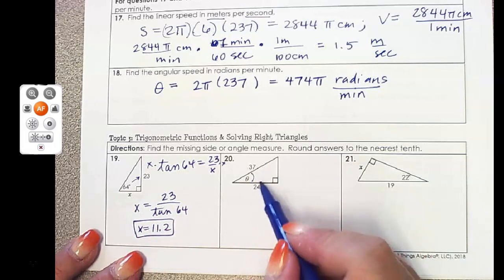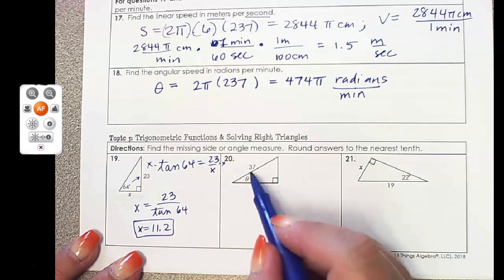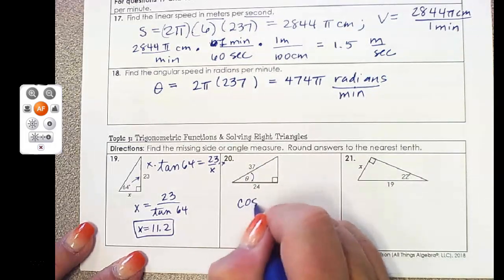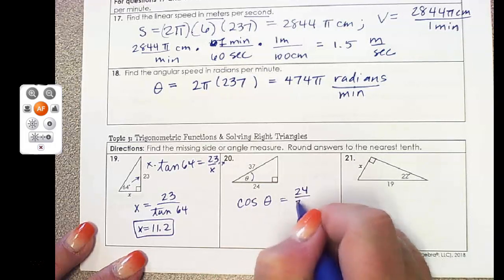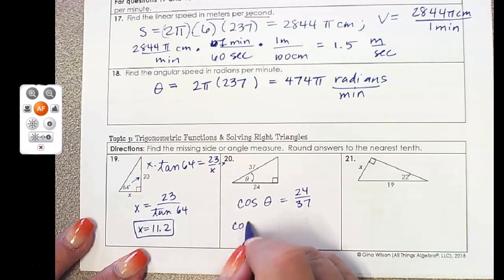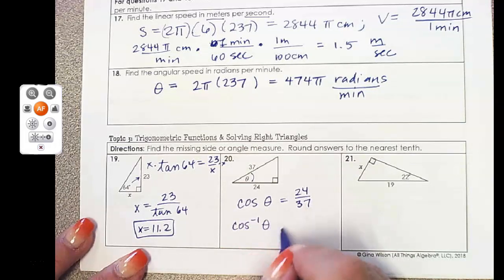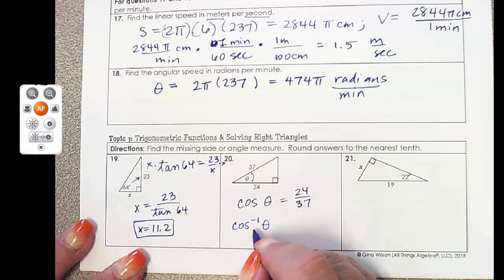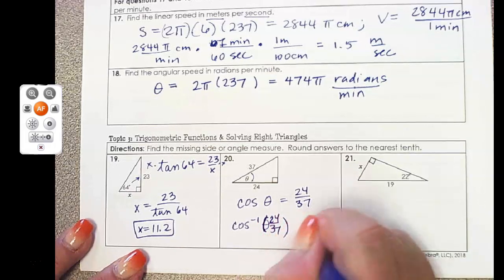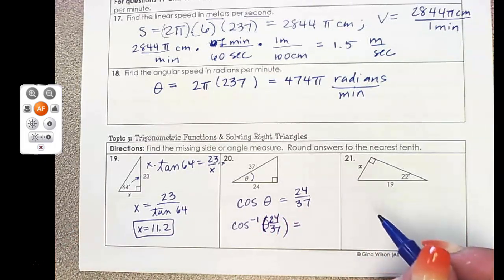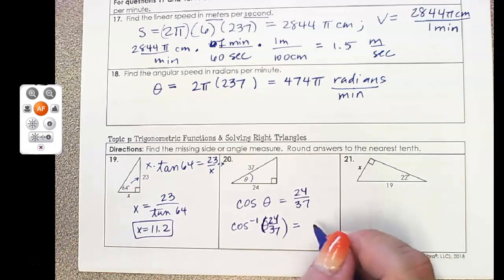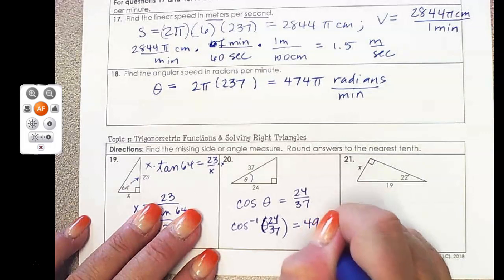Here's my θ. I know the adjacent and I know the hypotenuse. So that is going to be the cosine of θ. And whenever I'm looking for the angle and I know the ratio, that tells me I'm going to use the inverse cosine button on my calculator. So the inverse cosine of 24 over 37. And I make sure my calculator is in degree mode. I'm going to put that in and I get 49.6 degrees.